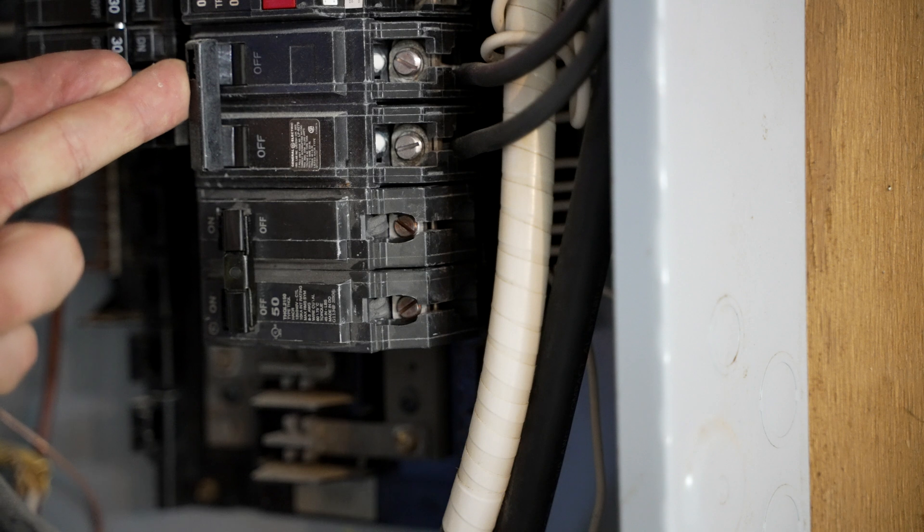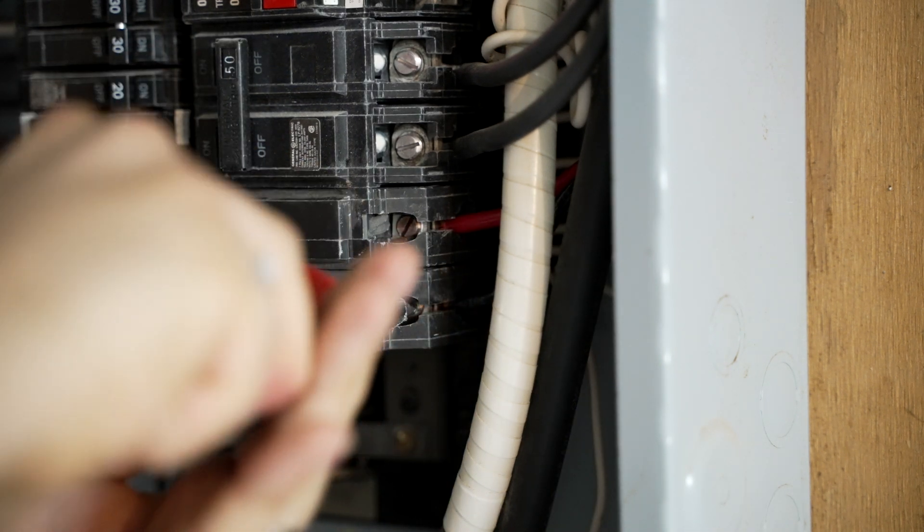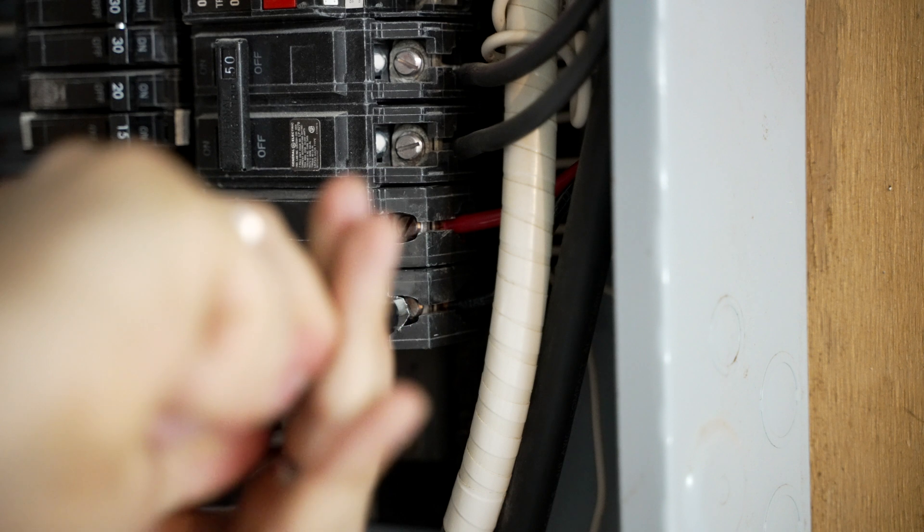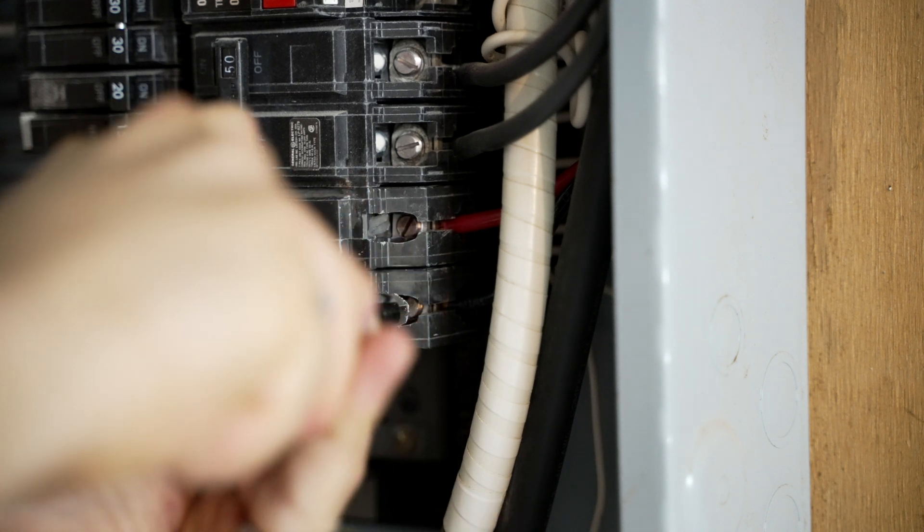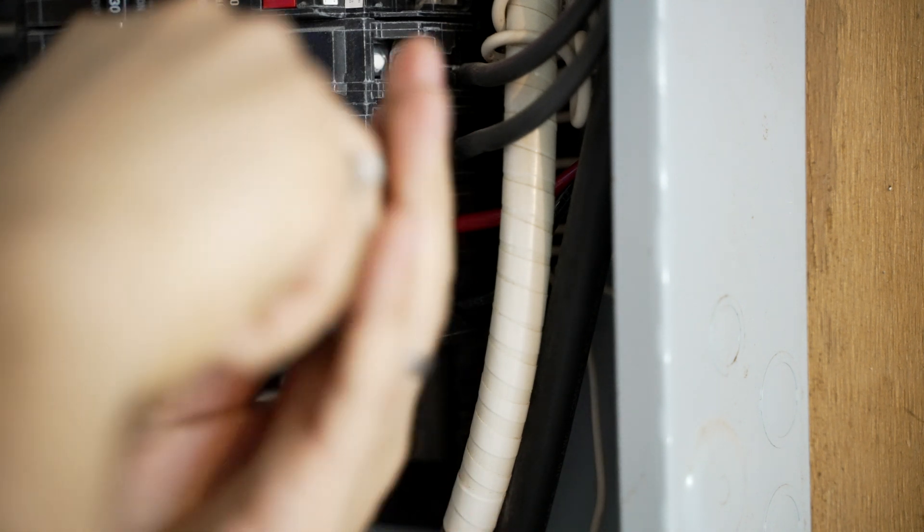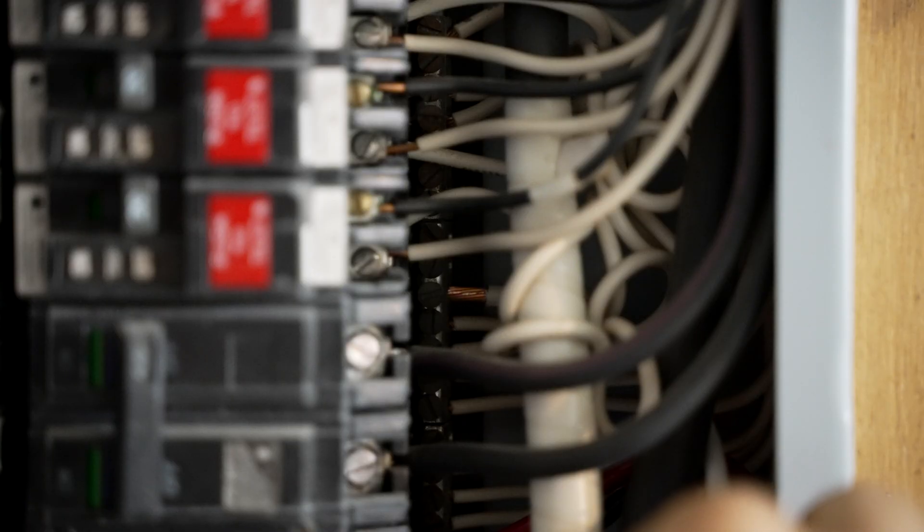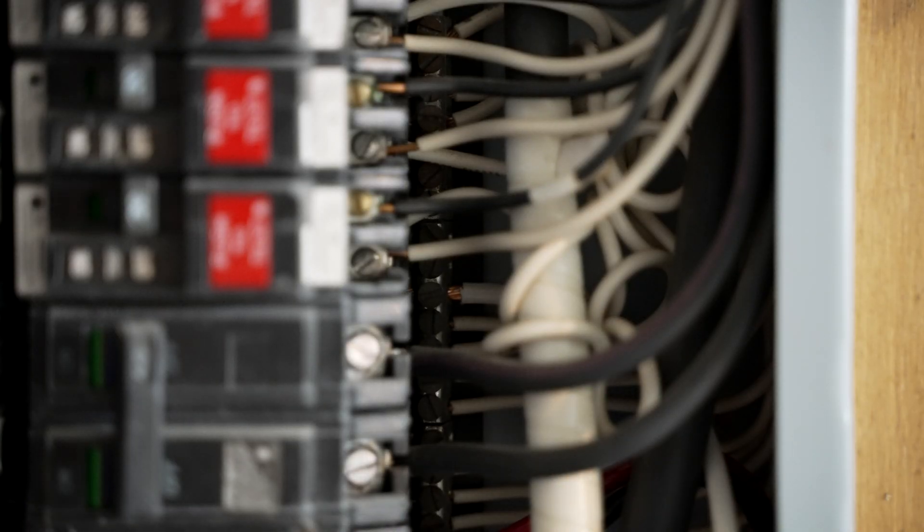When I'm working on a live panel, I'll generally turn off the breaker or two next to the one I'm working on just so I don't accidentally hit the live lugs on that breaker. The two phases connect into the new 50 amp breaker. The neutral connects to the neutral bus and then the ground connects to the ground bar within the panel.